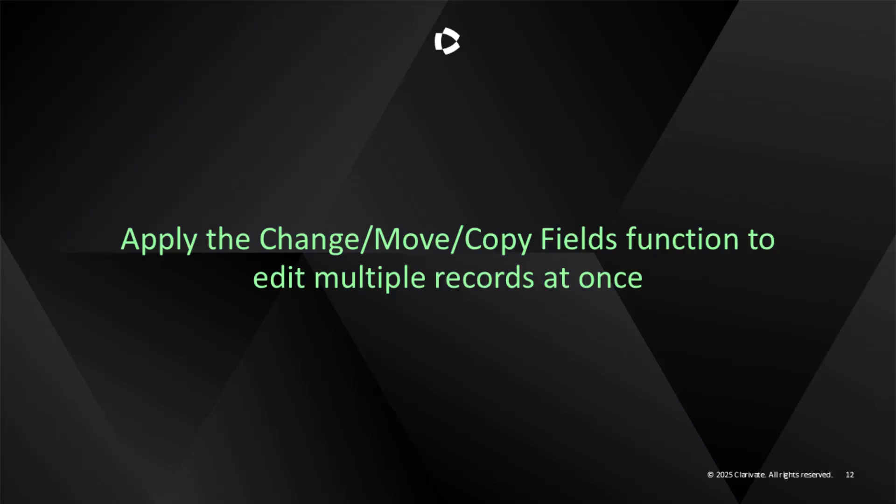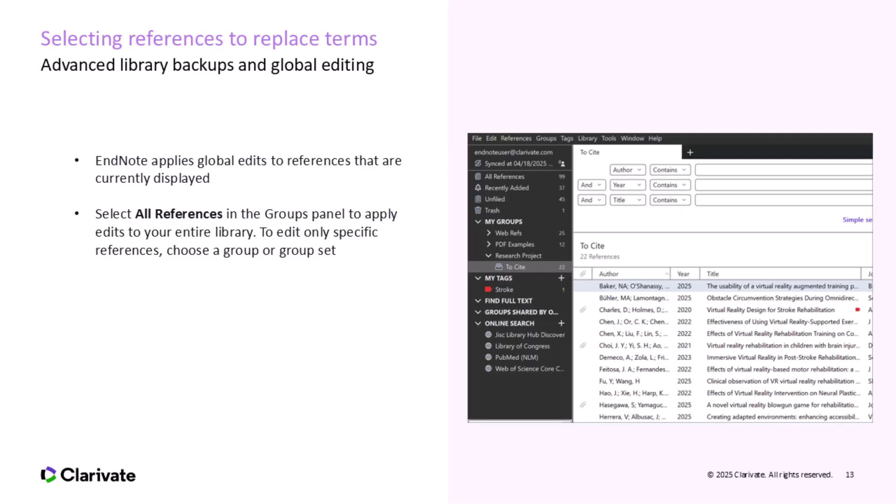Next, we will delve into the global editing functions in EndNote. It's crucial to remember to back up your library before performing any global edits in EndNote, as there is no Undo command for these modifications. Therefore, having a snapshot of your library in its current state is essential to safeguard against accidental changes. We strongly recommend creating a backup copy of your library before initiating global edits. EndNote applies global edits only to the references currently displayed in your library, so before proceeding, make sure the references you want to edit are visible. If you want to edit your entire library, select all references from the Groups panel.